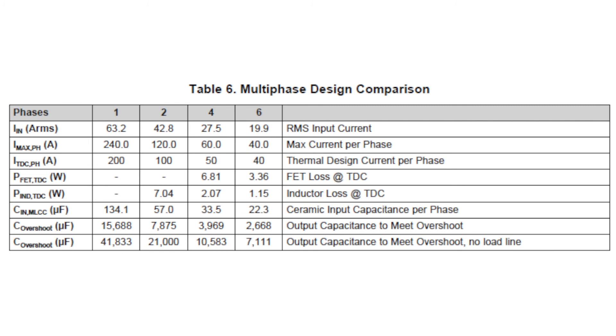2.7 mF versus 15.7. That's a huge savings. Just for fun, I included the capacitance numbers calculated assuming no DC load line, and you can see it makes mF of difference in all cases.